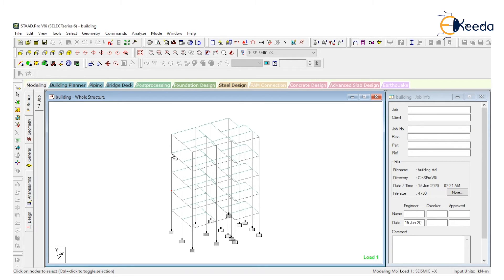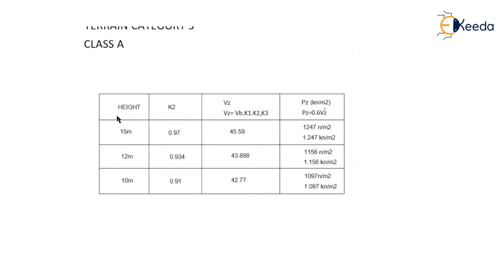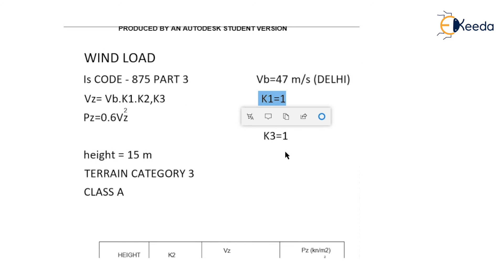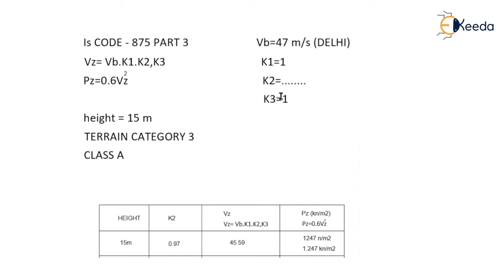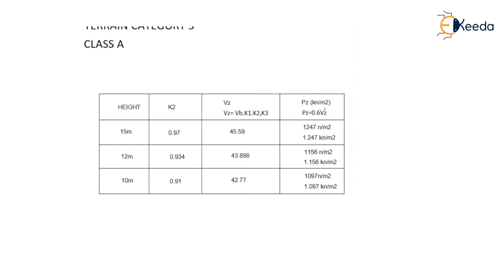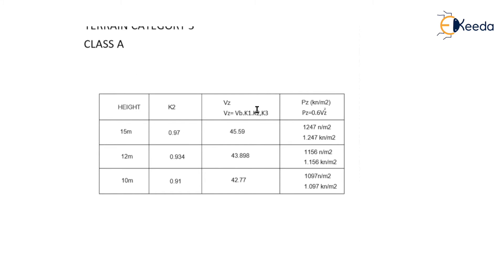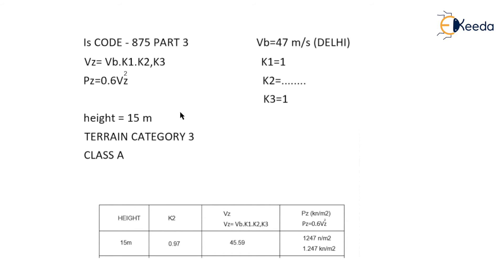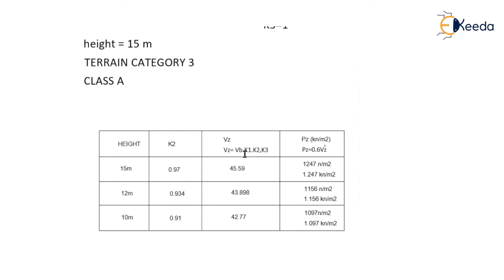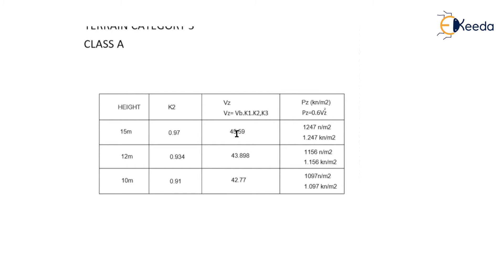In this example, I am calculating for 15-meter, 12-meter, and 10-meter heights. K1 and K3 are both equal to 1. I only need to calculate K2. For 15-meter height, Terrain Category 3, Class A: K2 = 0.97. So VZ = 47 × 1 × 0.97 × 1 = 45.59 m/s.